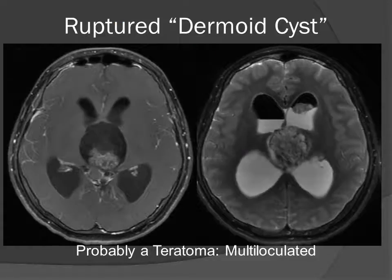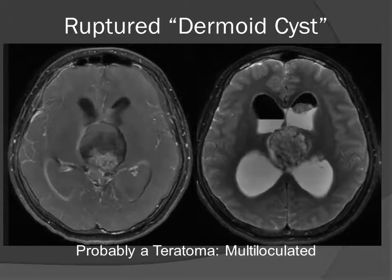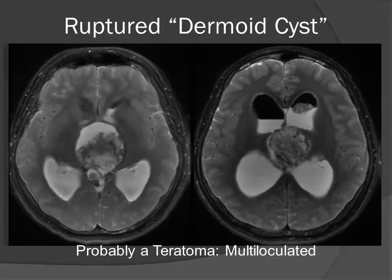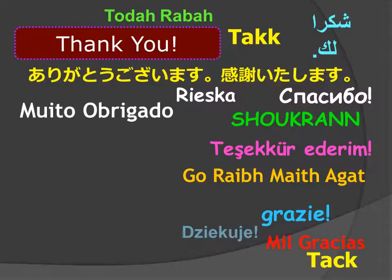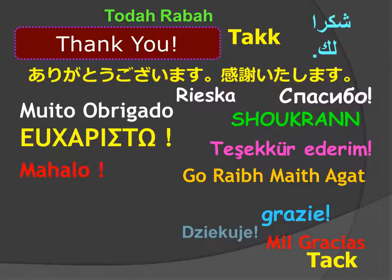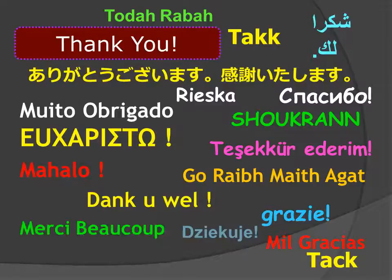Pineal region teratomas are going to be heterogeneous with lipid material, water-like material, and solid components, as illustrated here in this example. I'm Jim Smyrniotopoulos, and I approve this message. Thank you very much for your time and attention.